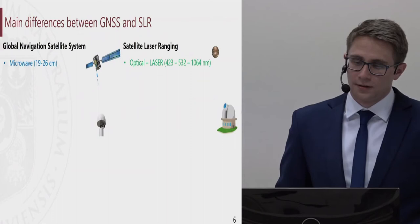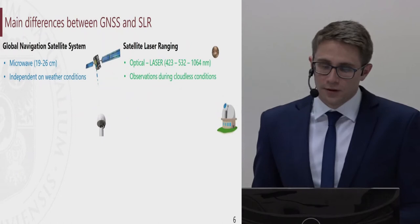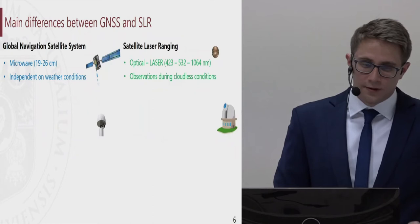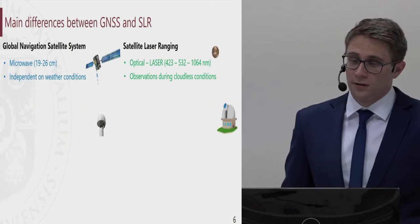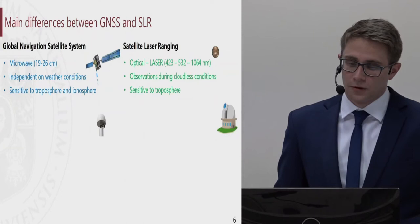We have two space techniques which are different in many aspects. First of all, GNSS is a microwave technique, whereas SLR uses optical wavelengths. This implicates differences in signal propagation. GNSS is independent of weather conditions, whereas SLR observations can only be conducted during cloudless conditions. GNSS is sensitive to both troposphere and ionosphere, whereas SLR is sensitive only to the troposphere.